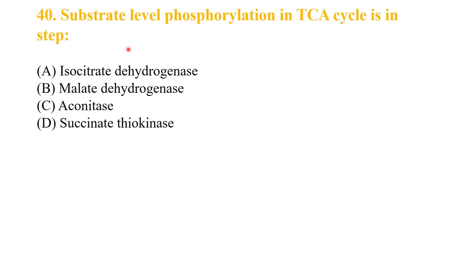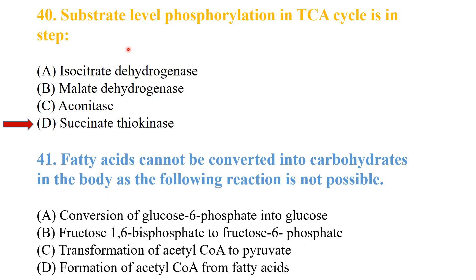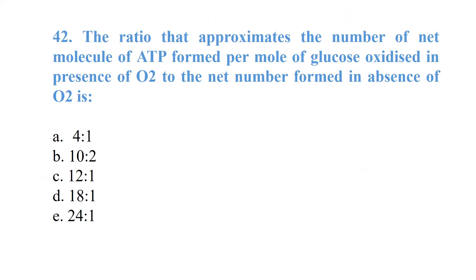Substrate-level phosphorylation in the TCA cycle occurs at the step of succinate thiokinase. Fatty acids cannot be converted into carbohydrates in the body because the conversion of acetyl coenzyme A to pyruvate is not possible. The ratio of net ATP molecules formed per mole of glucose oxidized with oxygen versus without oxygen is approximately 18:1.